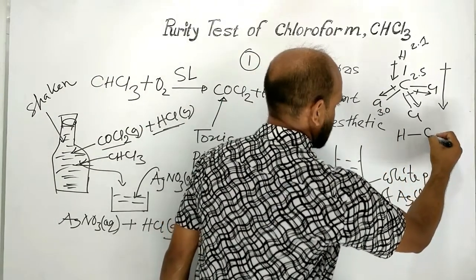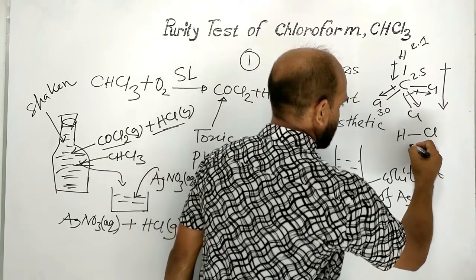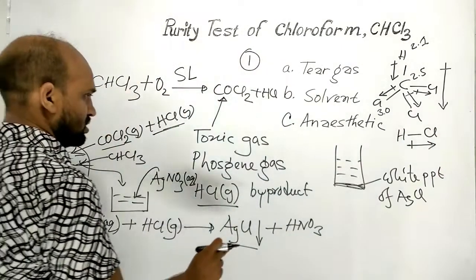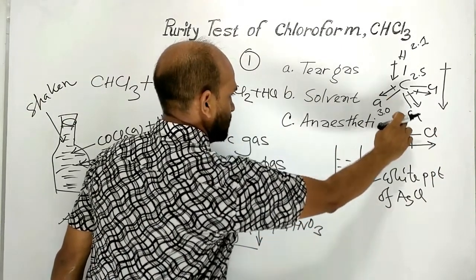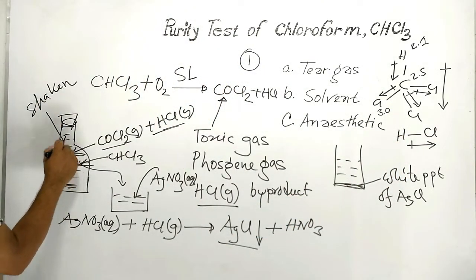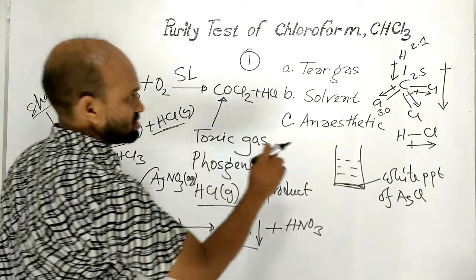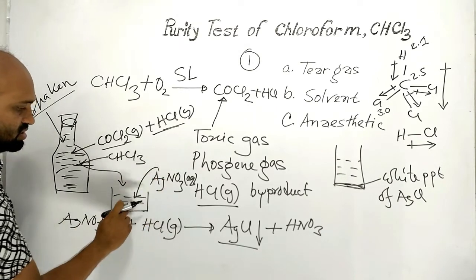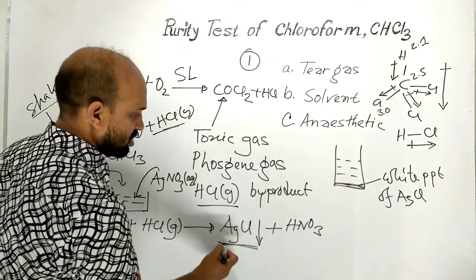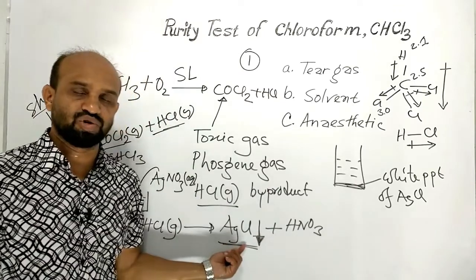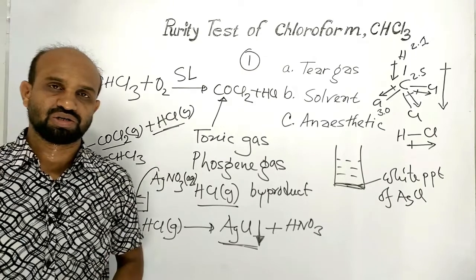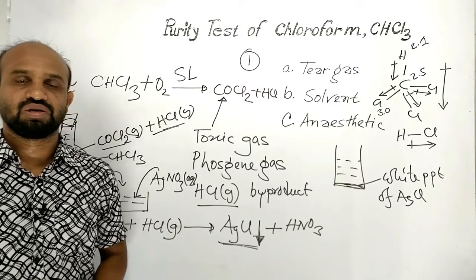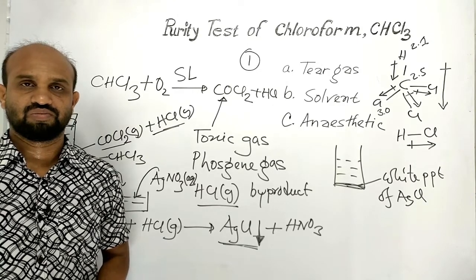Similarly, HCl is a polar molecule and its dipole moment is from hydrogen to chlorine. When this bottle is shaken, the HCl reacts with silver nitrate when it is added, and as a result a white precipitate of silver chloride is formed. This reaction proves that chloroform contains impurities like toxic carbonyl chloride and hydrogen chloride gas.